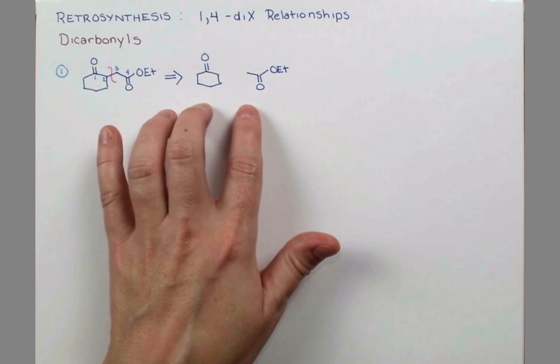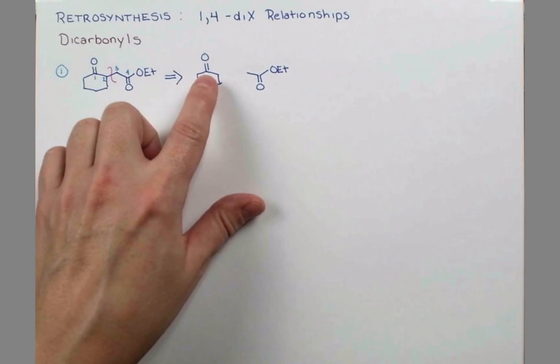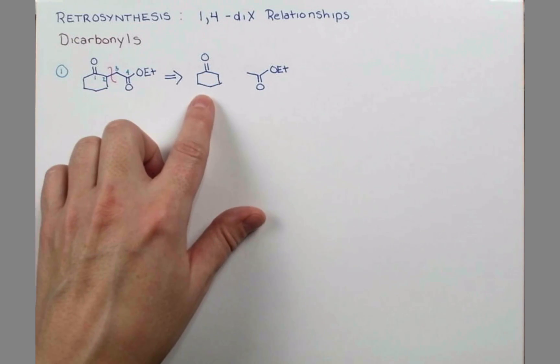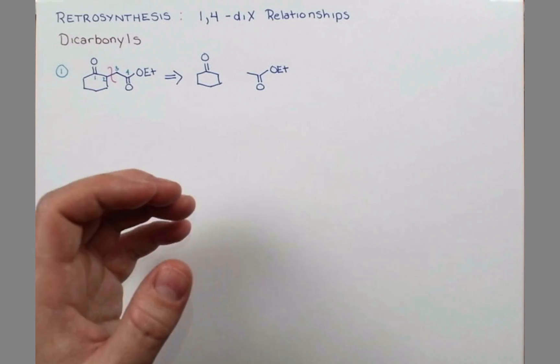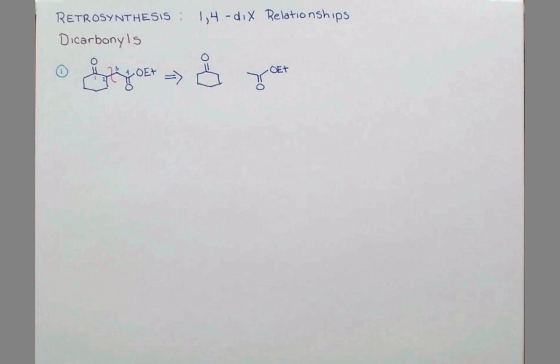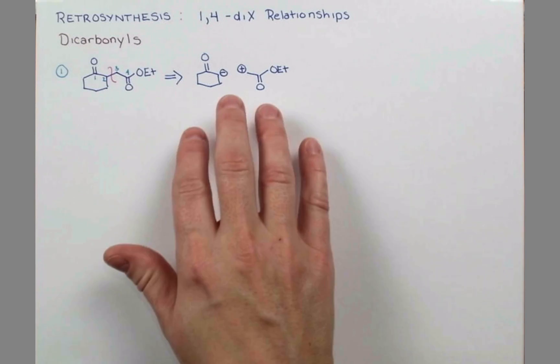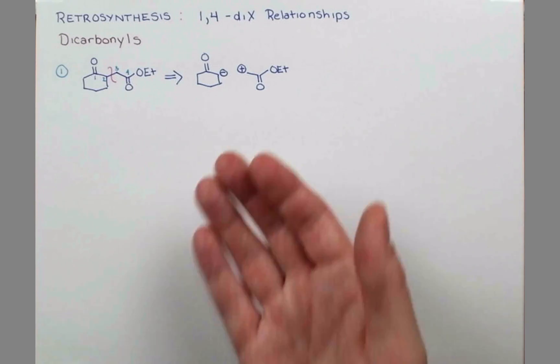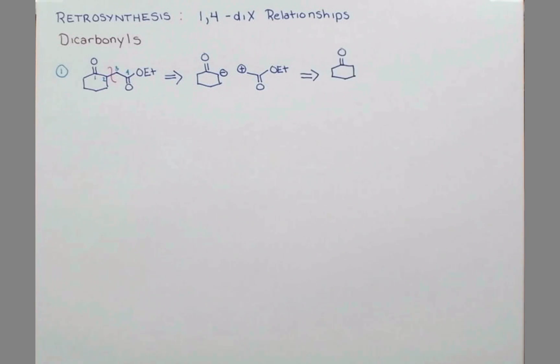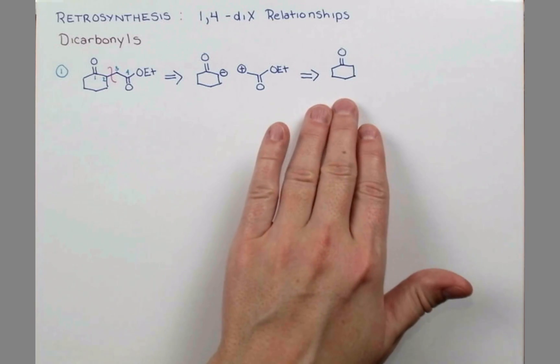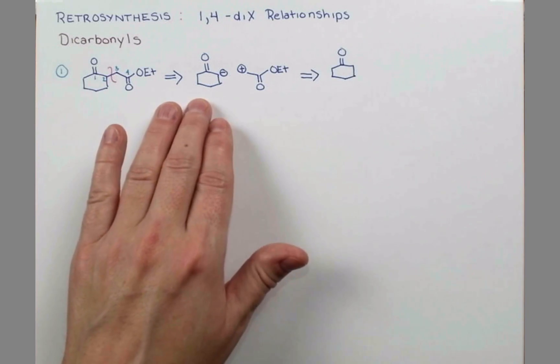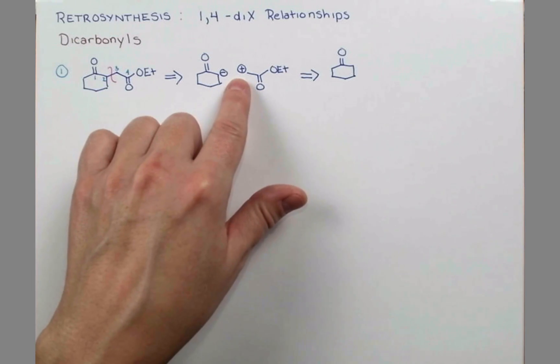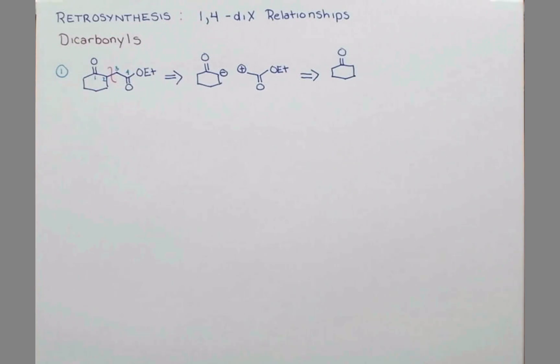Now we need to assign polarities. This is a secondary carbon atom, so I'm going to assign this as the negative partner. Now that we've assigned our polarities, we need to trace back to reagents. The first one is simple—it's just cyclohexanone that we enolized. But here we have a cation.